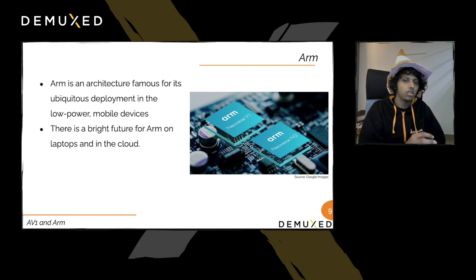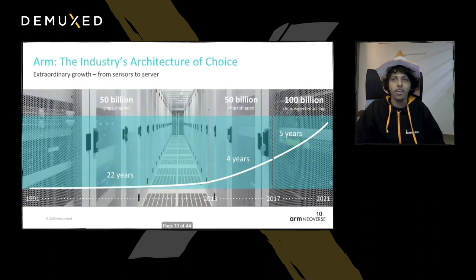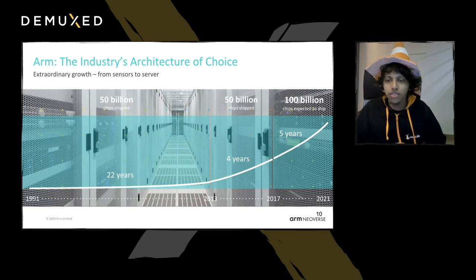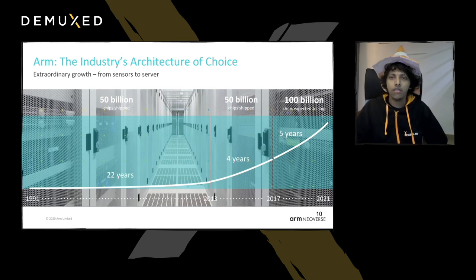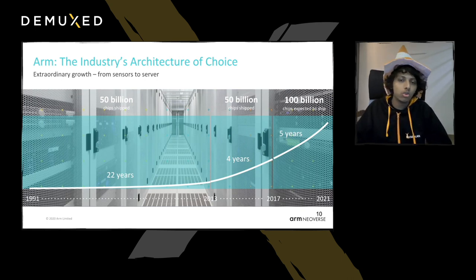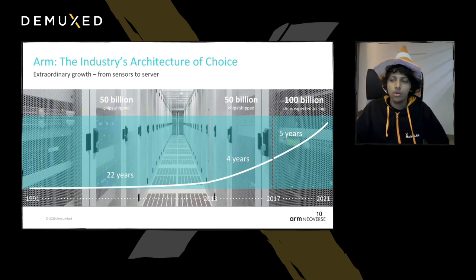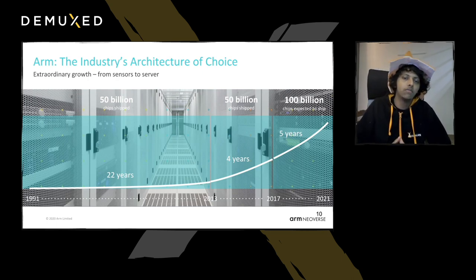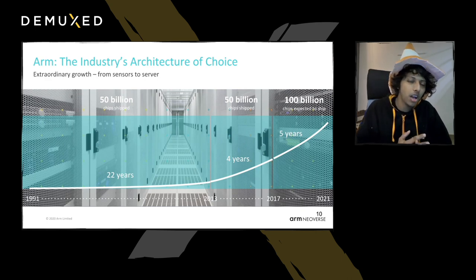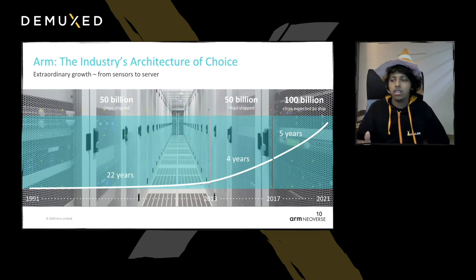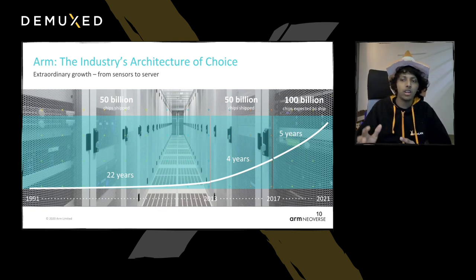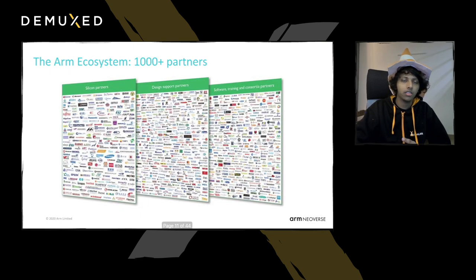The growth of ARM is quite remarkable. It took around 22 years to ship 50 billion chips, but only 4 more years to ship another 50 billion. ARM is expecting to sell around 100 billion chips by the end of 2021 — the growth is truly phenomenal.